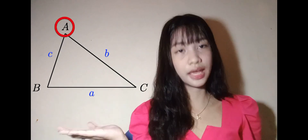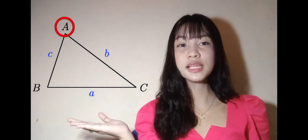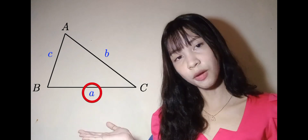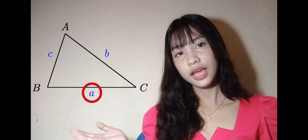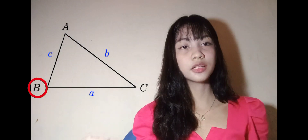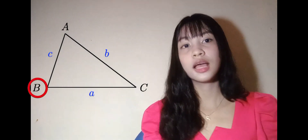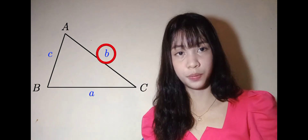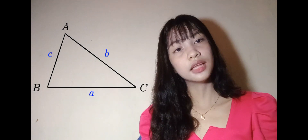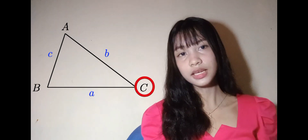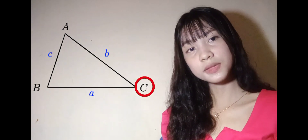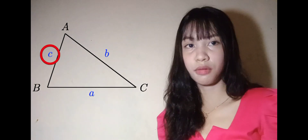This is our angle A and its opposite side, small letter a; and angle B and its opposite side, small letter b; and angle C and its opposite side, small letter c.